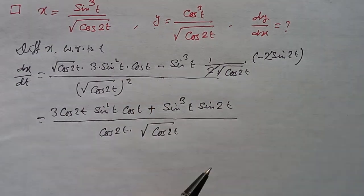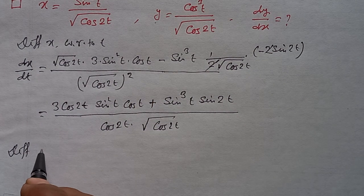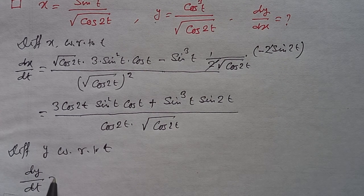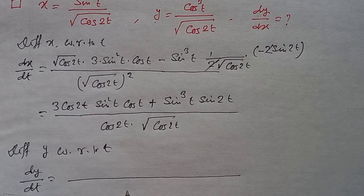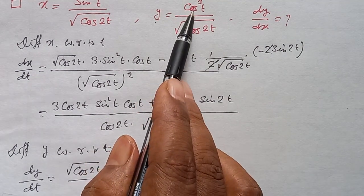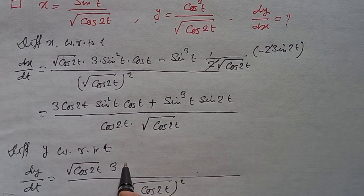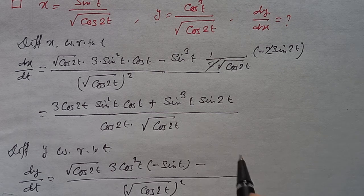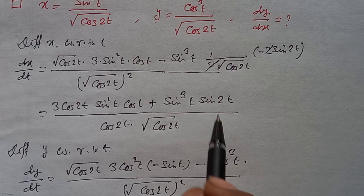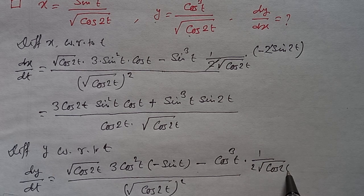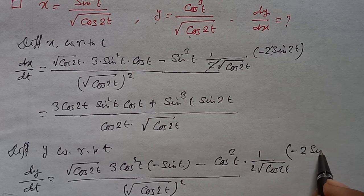Differentiating y with respect to t, we get dy/dt. Applying the u by v (quotient rule): root over cos 2t into d/dt of cos cube t, giving 3 cos square t into minus sin t, minus cos cube t into d/dt of root over cos 2t, giving 1 by 2 root over cos 2t into minus 2 sin 2t.